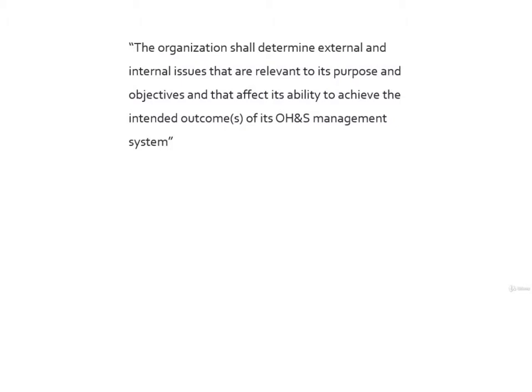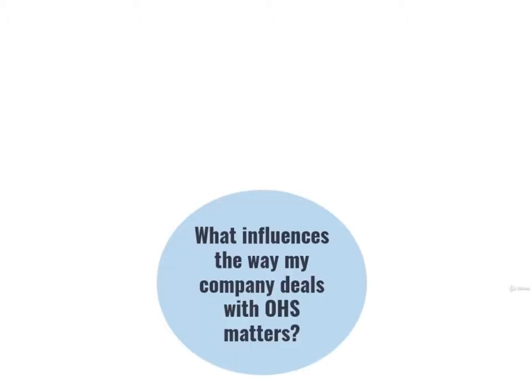What does this clause really mean? The standard basically wants the company to think about anything that could, in a way or another, have some influence on how it manages health and safety. By thinking about it, we mean that the company has to make some sort of document in which this is all properly mapped. The standard basically wants the company to ask: what influences the way my company deals with OHS matters?